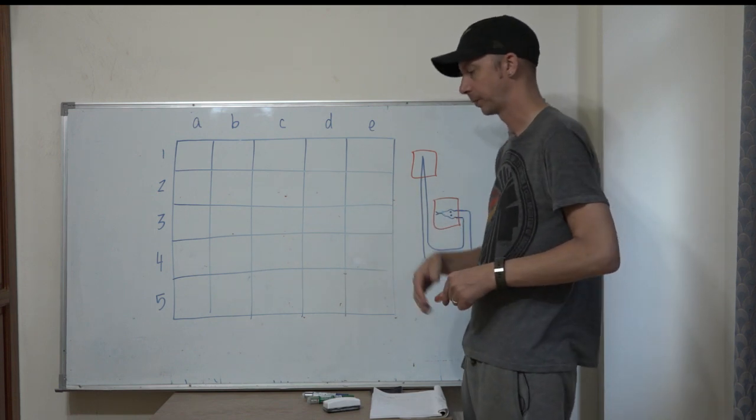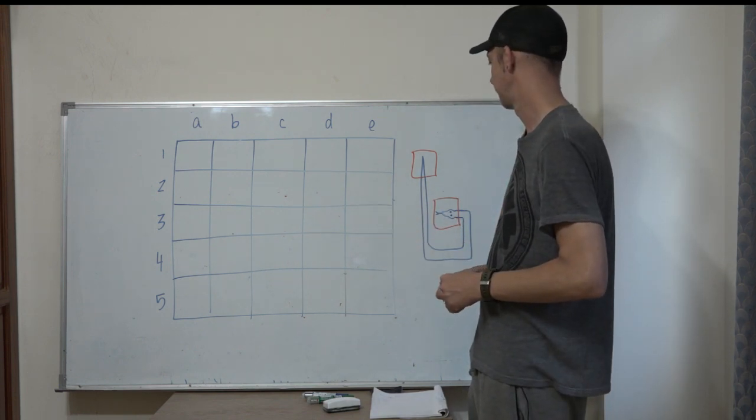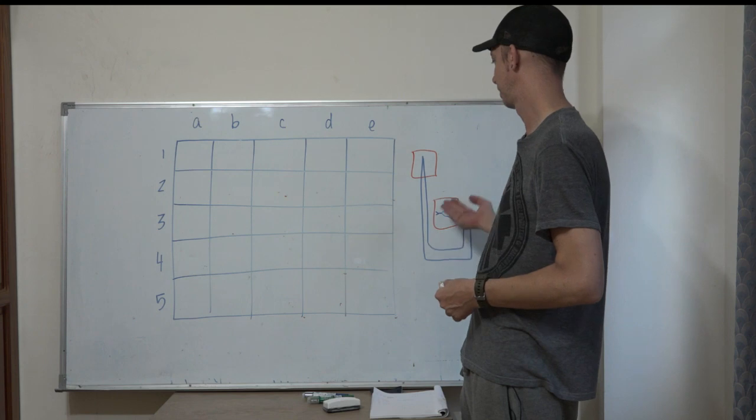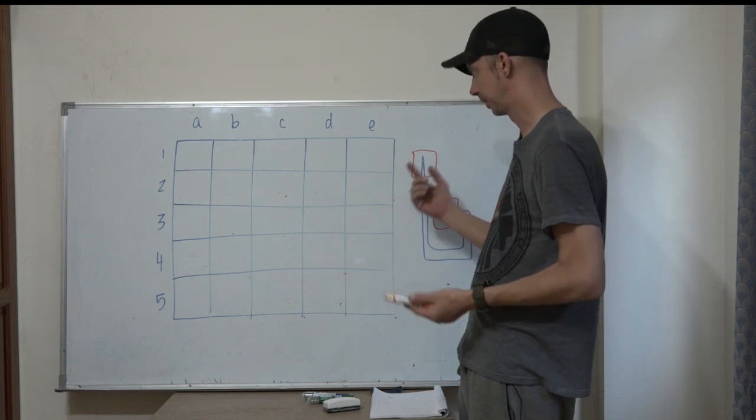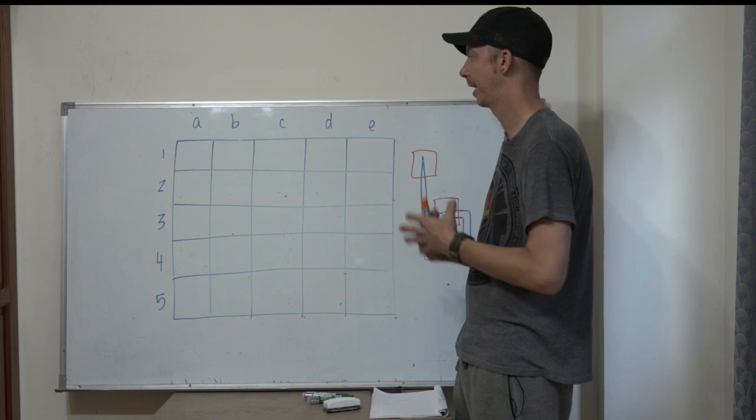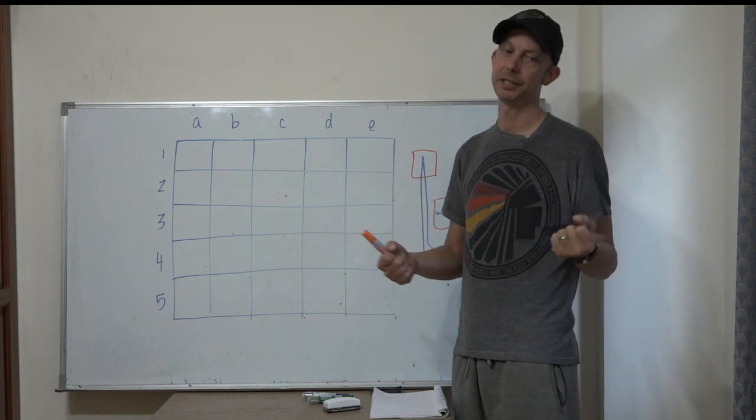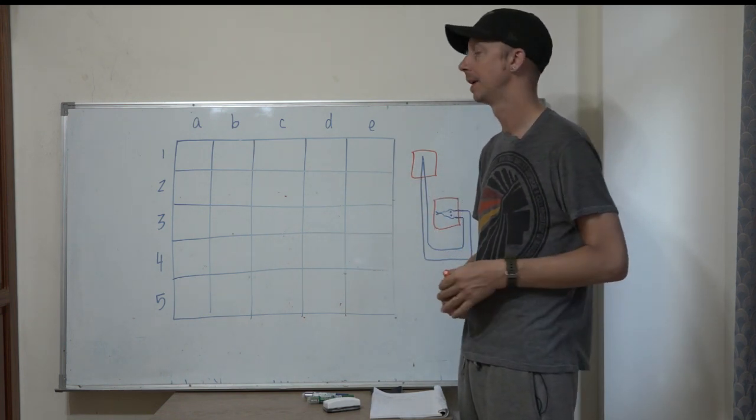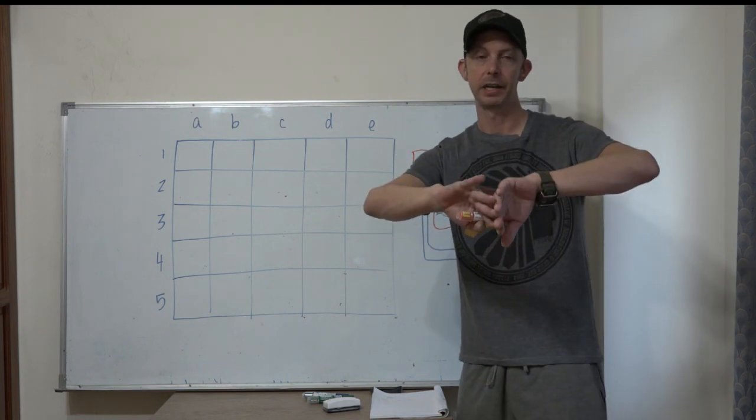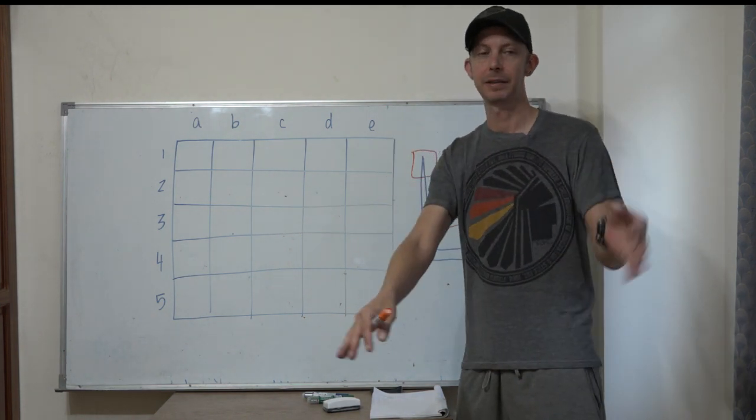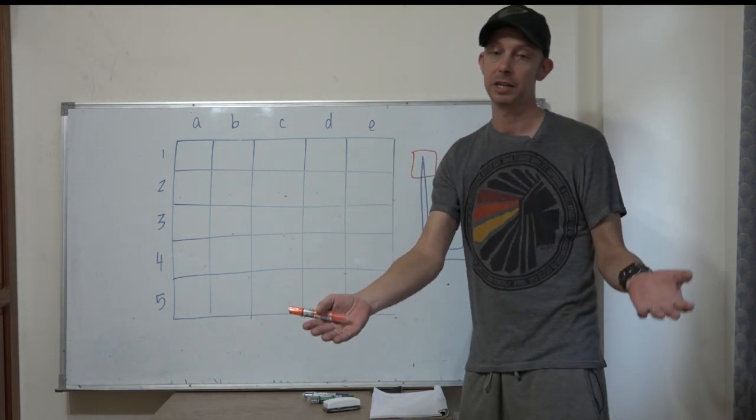However you reward your kids in the class for doing something well, they win the game by finding the head and tail. How it works is I'll have the kids practice asking each other questions in a Q&A format. I'll have the class divided into two teams. One student on each team stands up.